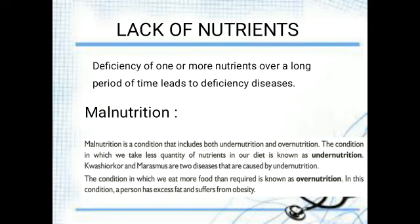Malnutrition is categorized as under-nutrition and over-nutrition. Under-nutrition means diseases caused due to insufficient nutrients in our food. For example, the diseases might be kwashiorkor and marasmus. Over-nutrition is due to over-consuming of particular nutrients, such as fat — over-consuming of fat leads to obesity.